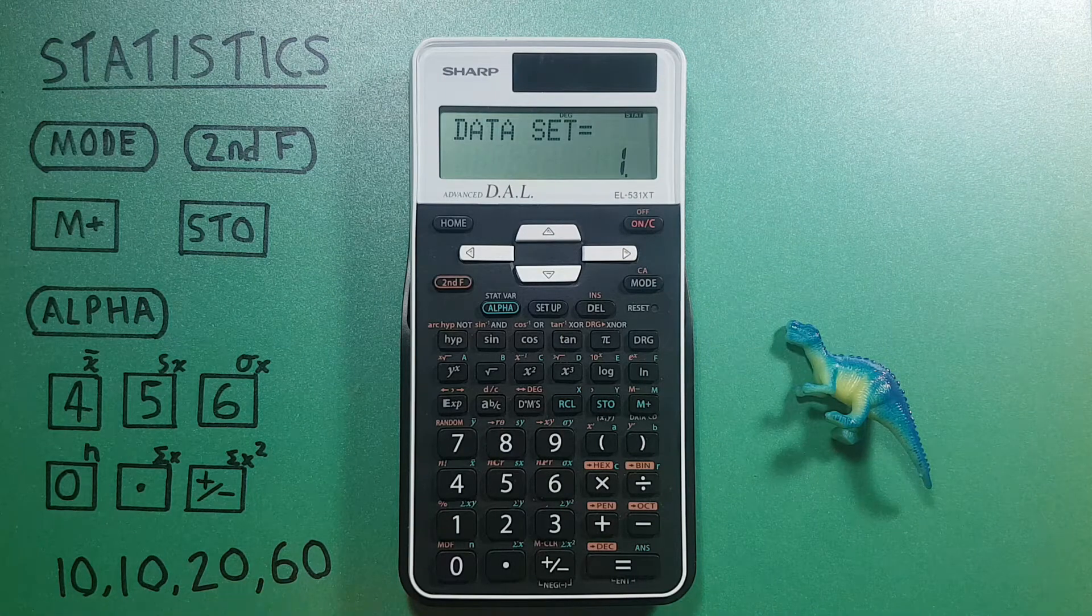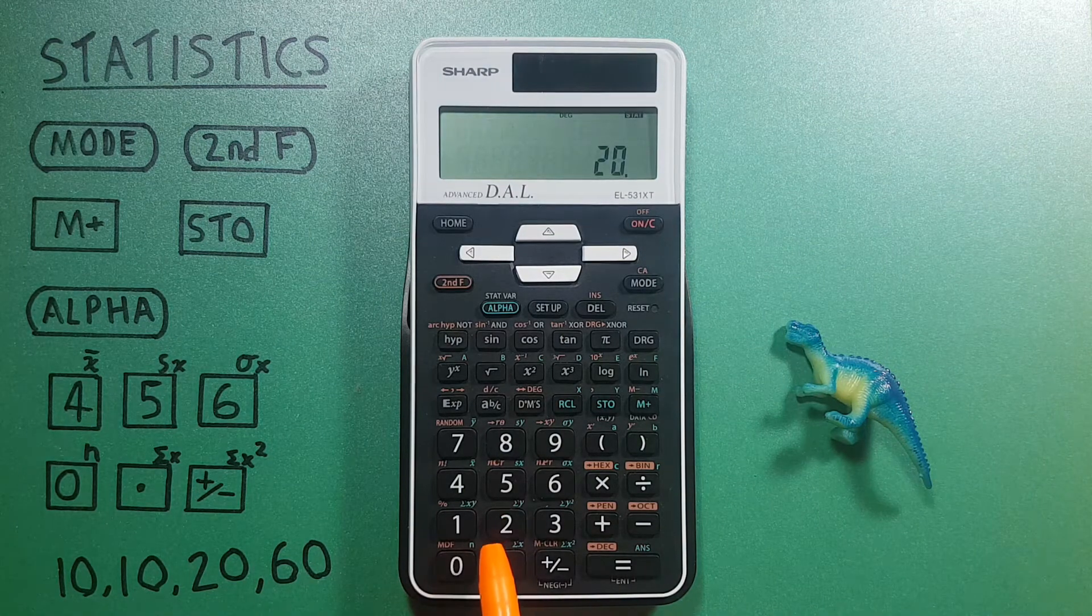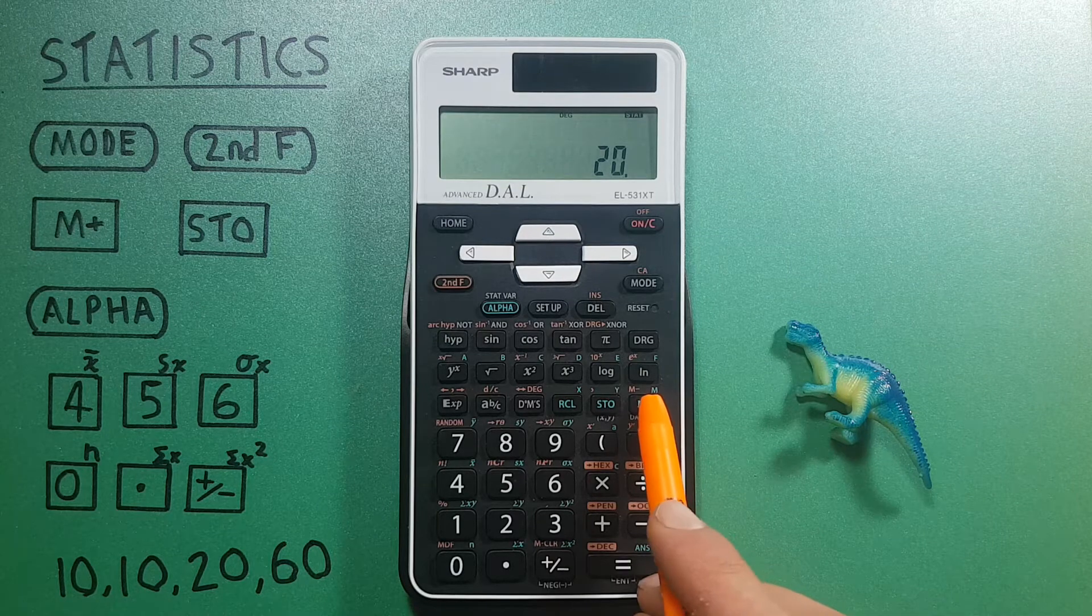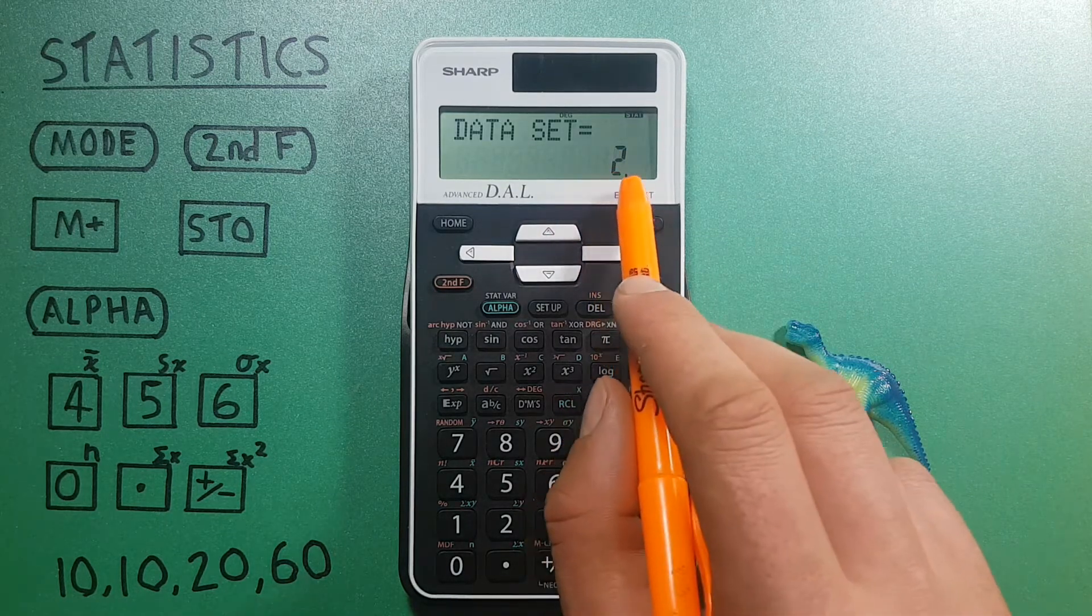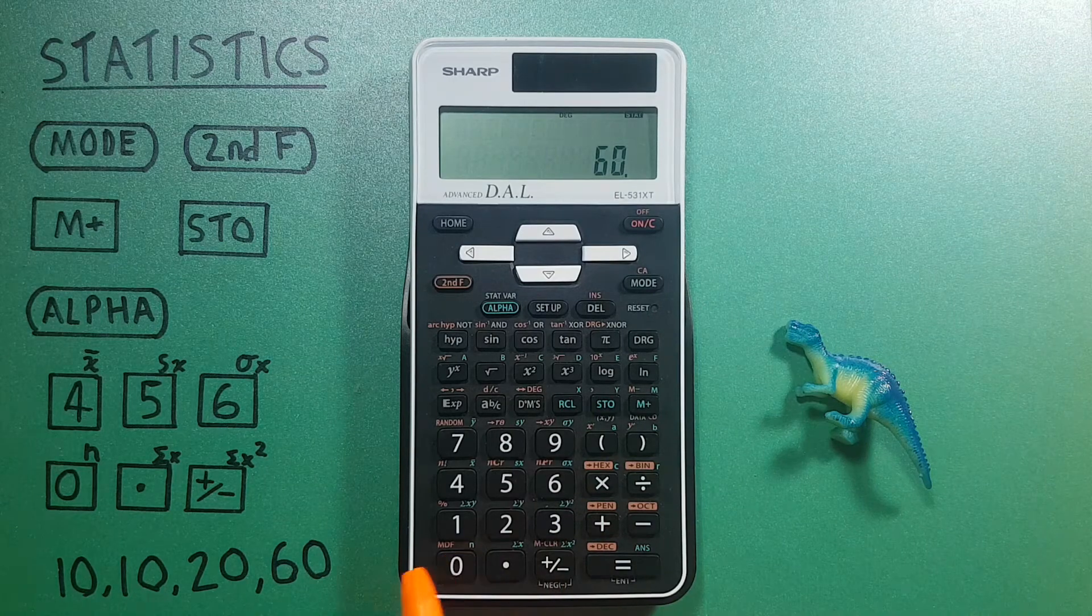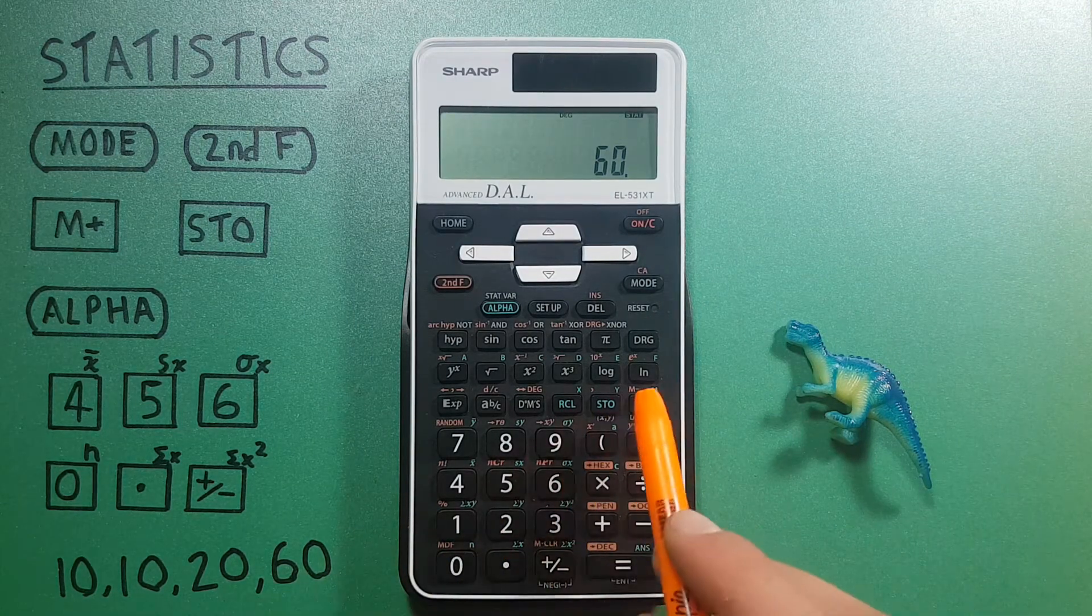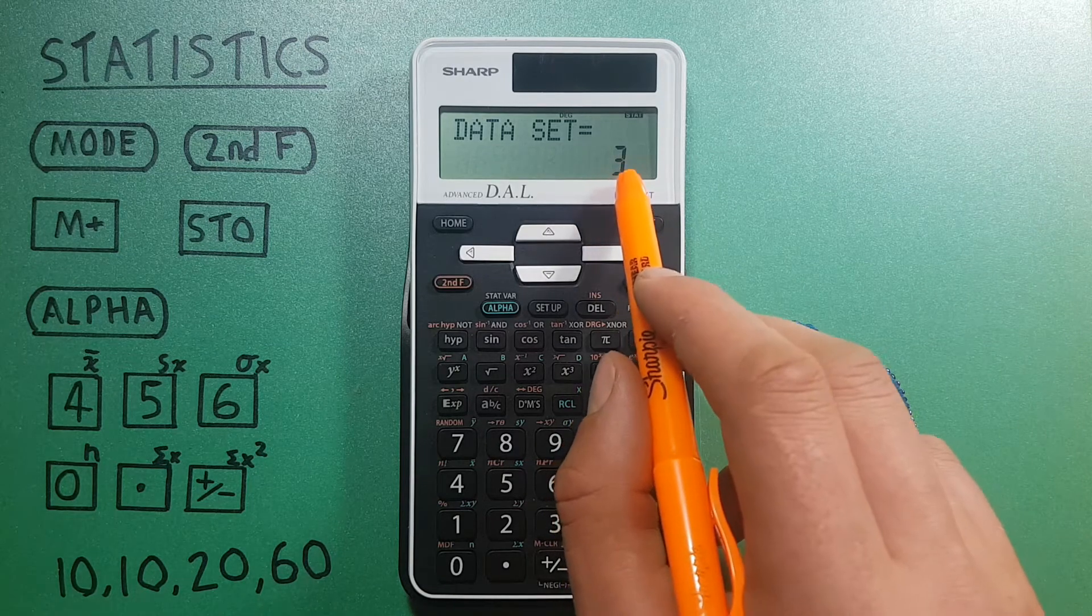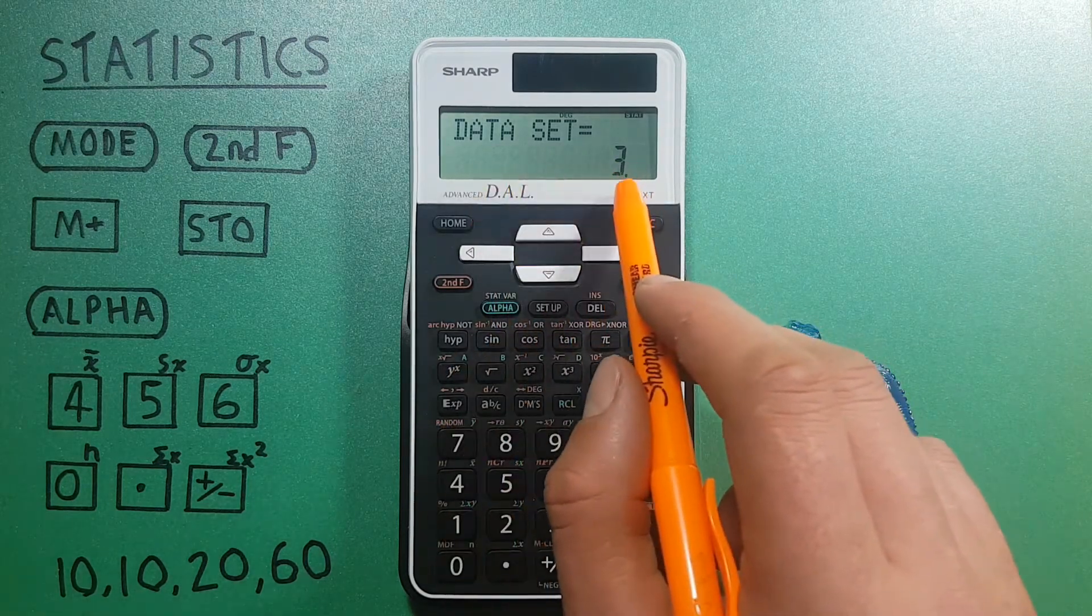Our next value is 20, so we press 20, and then again the M plus to enter it into our data set. We have a data set of two now, and then 60, which is our final piece of data, M plus. We have a data set of equals three.